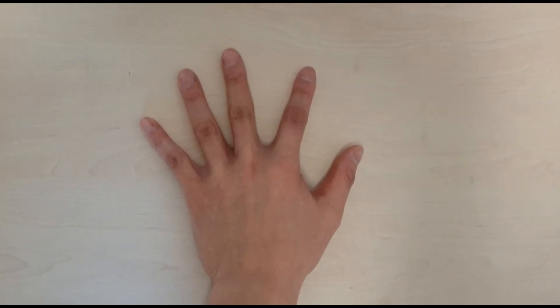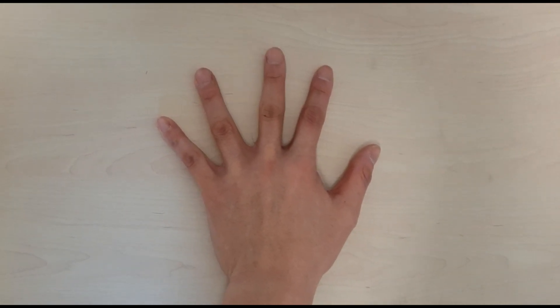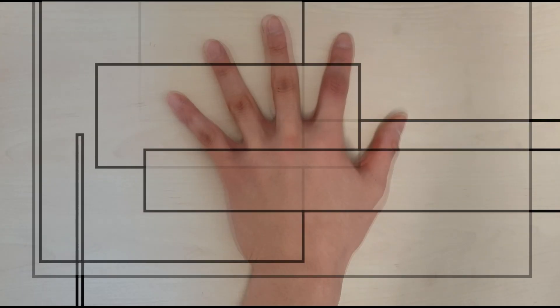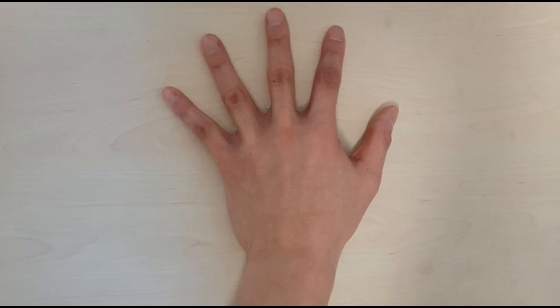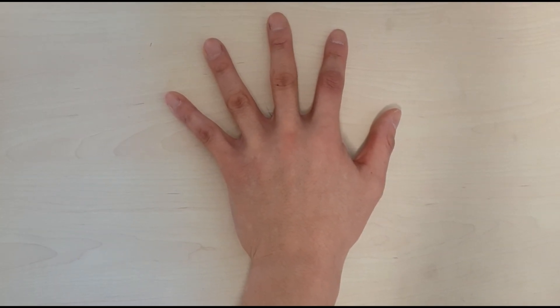Wartenberg sign is another examination for ulnar nerve palsy. We ask patients to deviate the middle finger radially and ulnarly. If patient is unable to do this Wartenberg sign, the interosseous muscles are affected.